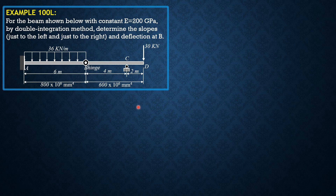First, let's consider section BCD. The sum of moments about B equals 0, so R sub C times 4 minus 30 times 6 gives R sub C equal to 45 kilonewtons. Considering BCD, summation of forces in Y: just to the right of B the internal reaction is 15 kilonewtons downward, as shown.